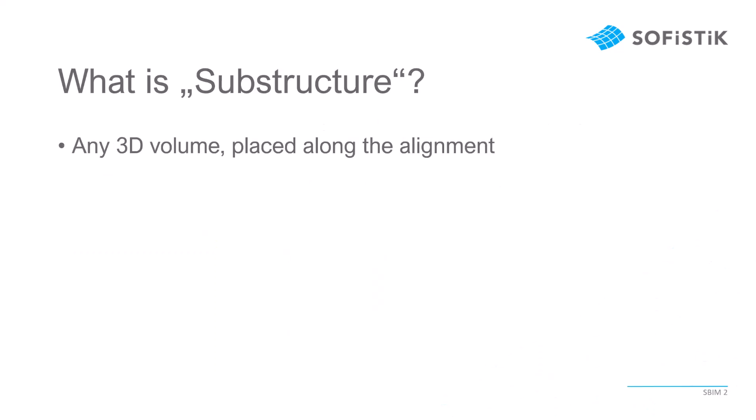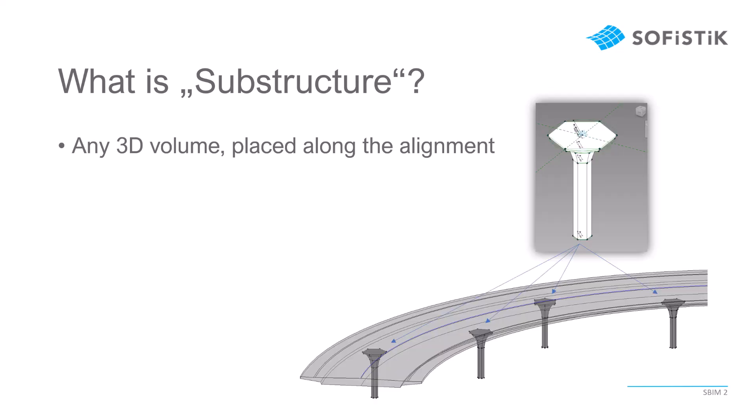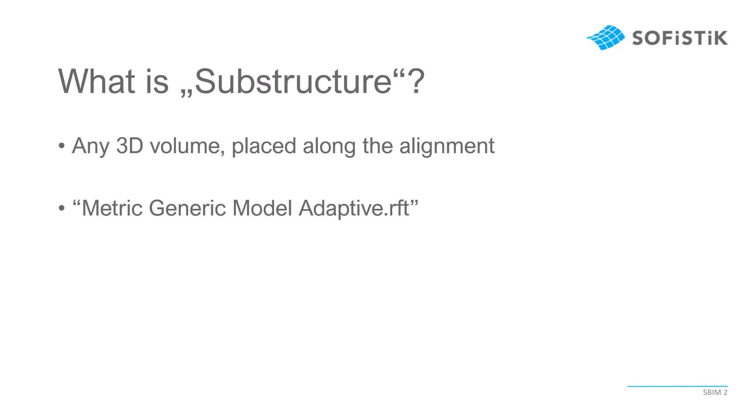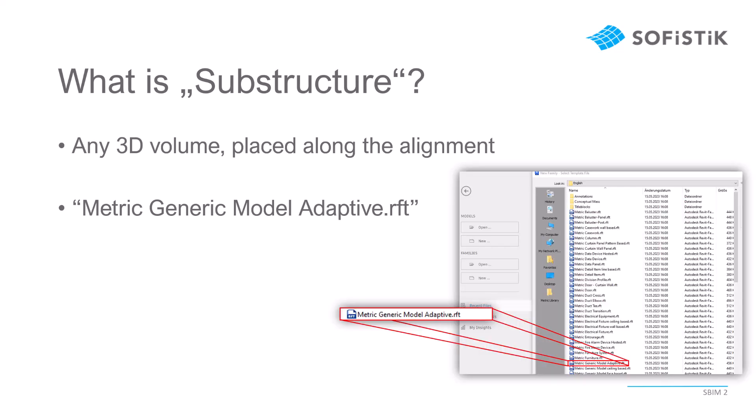What do we actually use the substructure command for? We can use it to create any kind of parametric three-dimensional volume and place it along an alignment. It is not necessary to create it parametrically, but the idea is we can — and we can basically create any kind of three-dimensional volume in a Revit family to use it to be placed along the axis. The basis for all of this is a metric generic model adaptive Revit family.